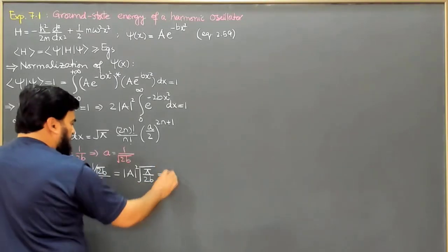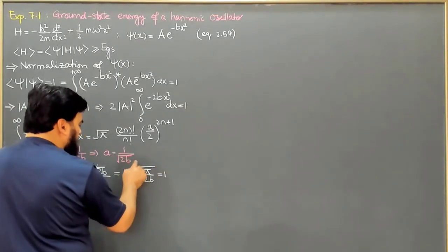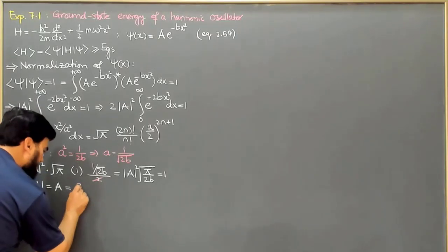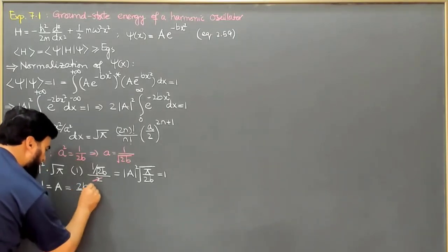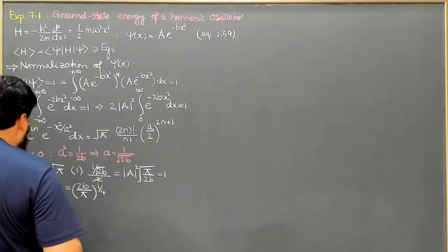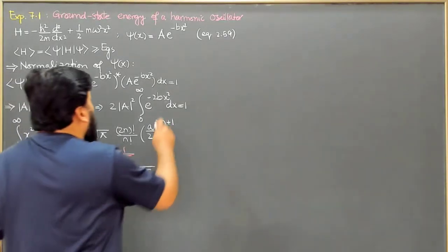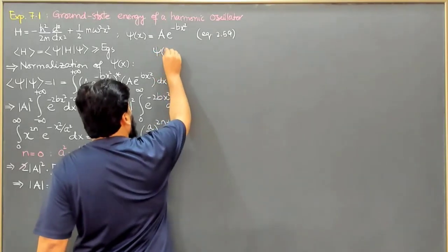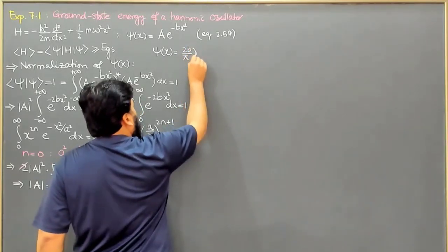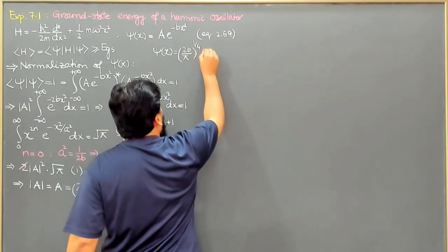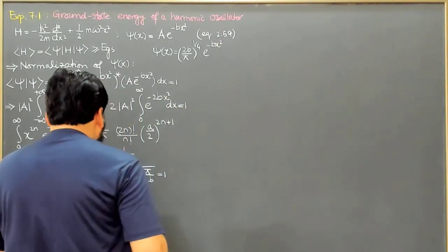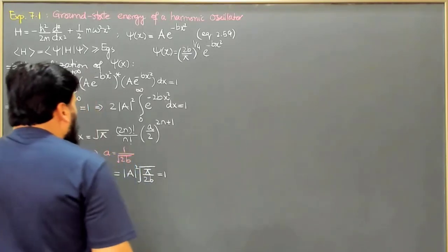Taking the square root and simplifying, the normalization constant A equals 2b over pi to the power 1 over 4. Therefore our normalized wave function is psi of x equals 2b over pi to the power 1 over 4, times e to the power minus b x squared. This is our normalized trial wave function.